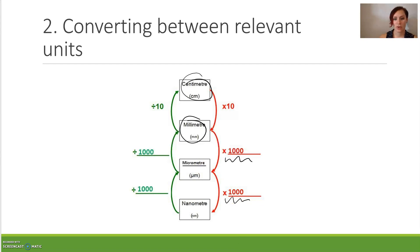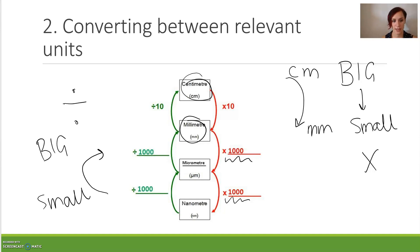If we needed to go between big units to small units, say in this case centimeters to millimeters, the bigger unit converting down to the smaller unit, we need to do a multiplication. If we do the opposite and we are going from a smaller unit to a bigger unit, small to big, this is when we have to do a division.